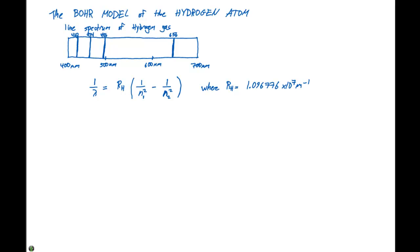That said one over lambda, or one over the wavelength, is equal to RH times the quantity one over N1 squared minus one over N2 squared, where RH equaled 1.096776 times 10 to the seventh inverse meters. So we had this relationship and we were able to fit this mathematically to this spectrum, but no one really understood what on earth this information was telling us.